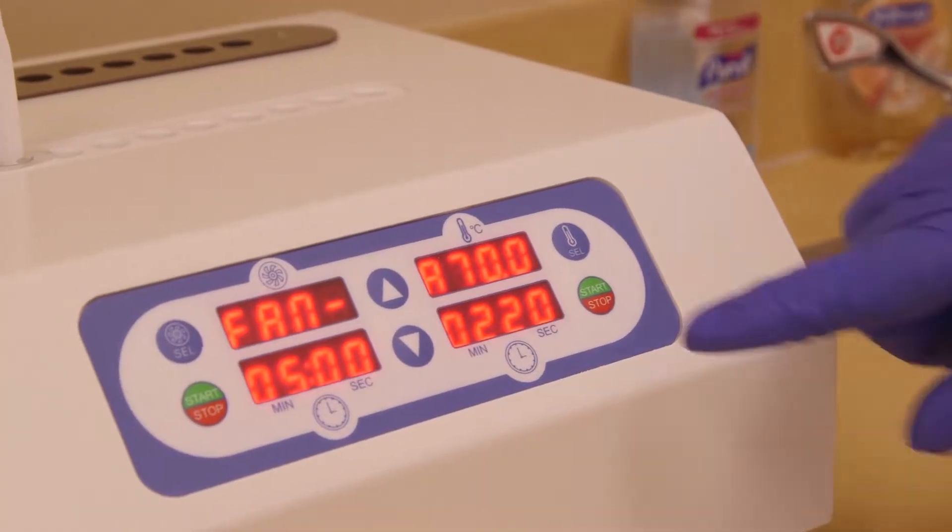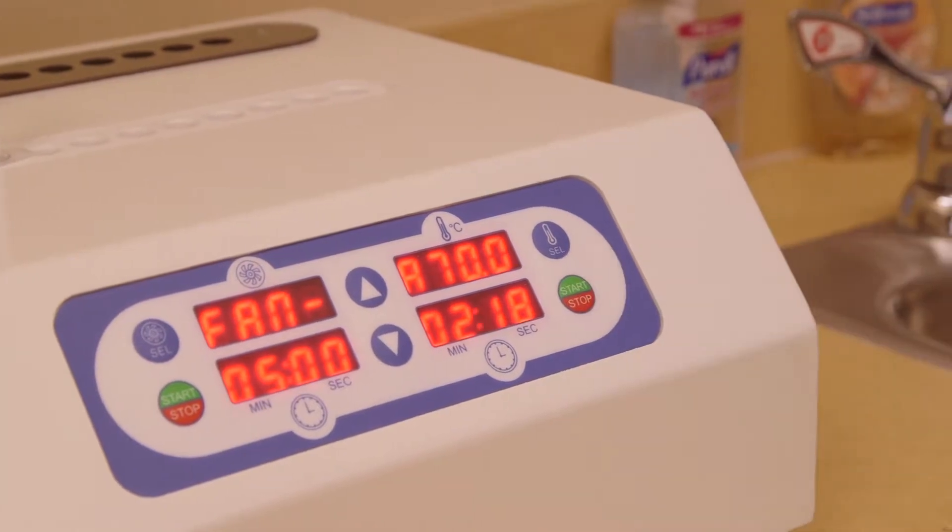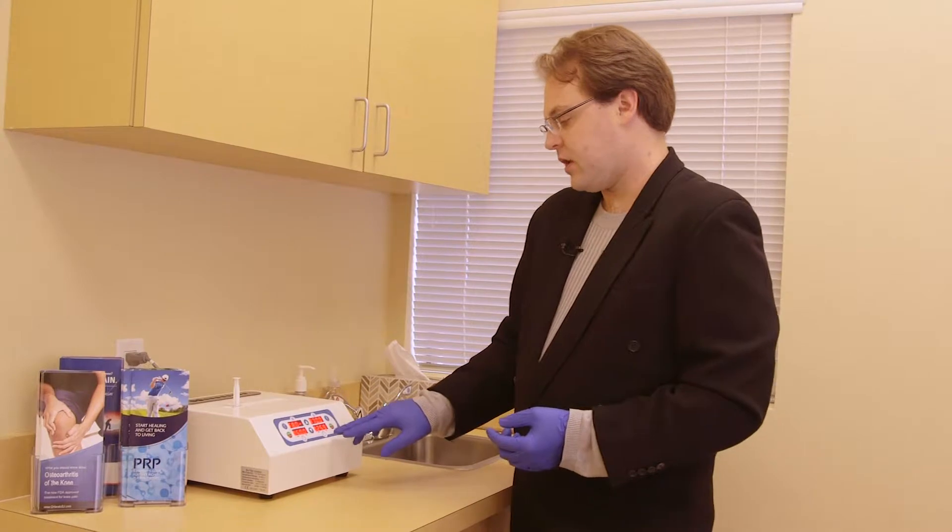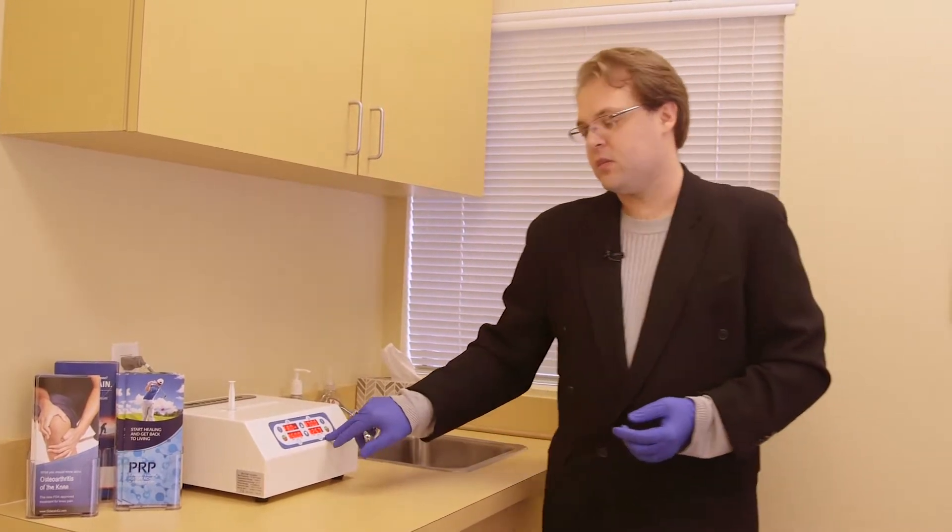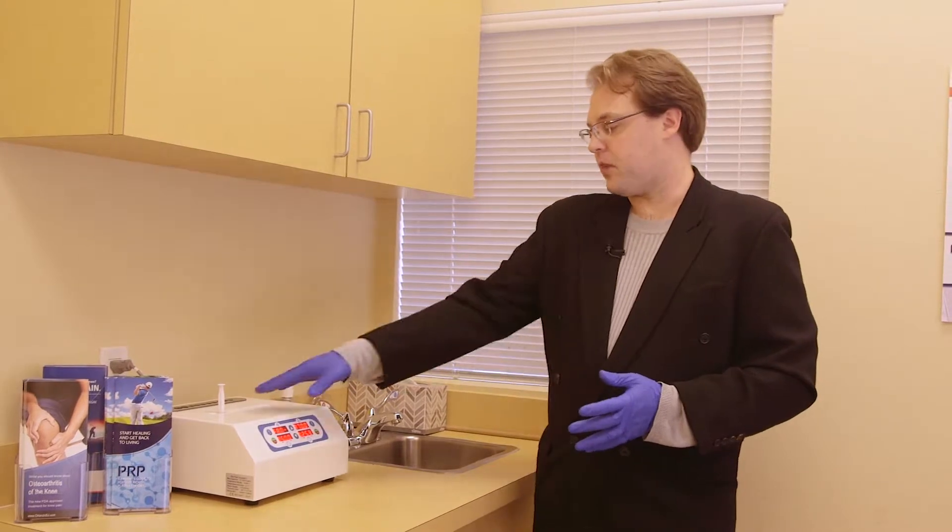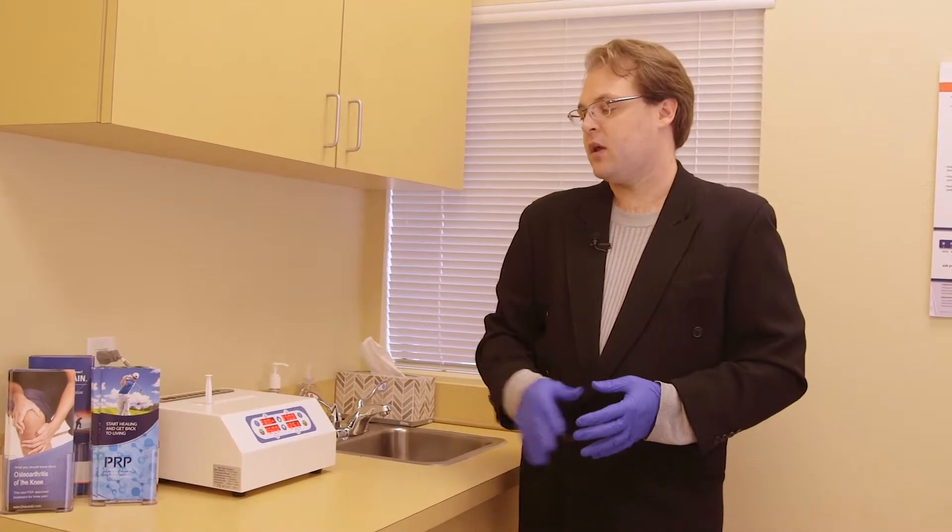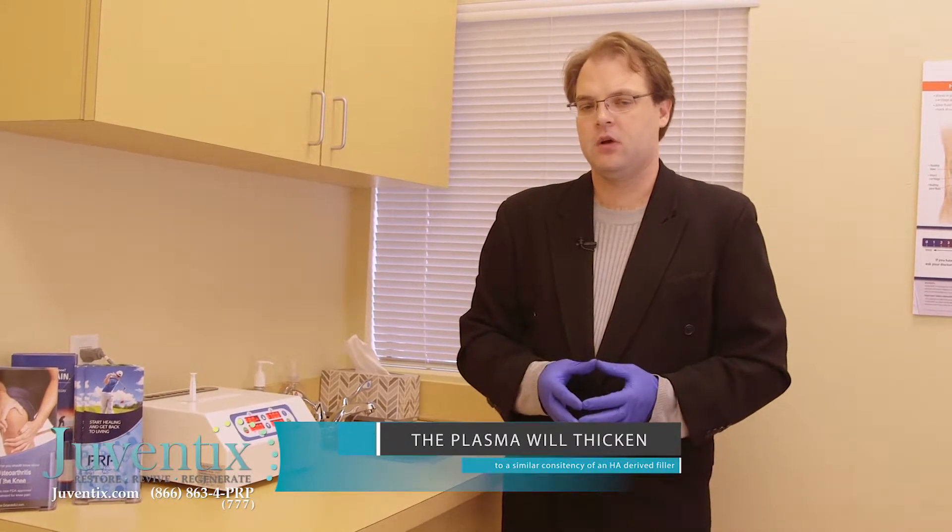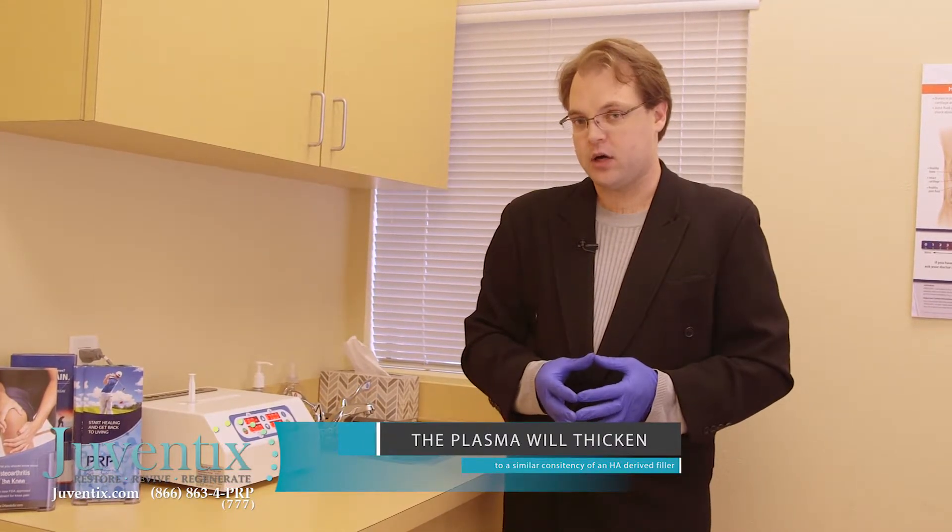Press start on the right-hand side screen which controls your heating. This process will run for three minutes. It's going to partially coagulate the plasma by triggering the thrombin cascade. This will thicken the plasma, creating a consistency similar to a hyaluronic acid-based product like Juvederm.